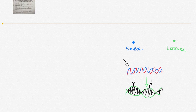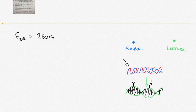If we've got two car horns operating at the same frequency, the car frequency — F_car — is equal to 260 Hertz. So the listener is emitting 260 Hertz, and the source is also emitting a frequency of 260 Hertz.